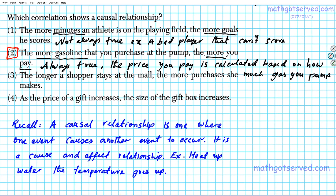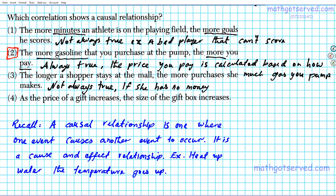Let's take a look at options three and four and discuss why they are not causal relationships. Number three: the longer a shopper stays at the mall, the more purchases she makes. Is this always the case? No, it's not always true. What if she has no money or she runs out of money? Can she continue shopping after her money runs out? The answer is no — if she has no money, she can't shop anymore.